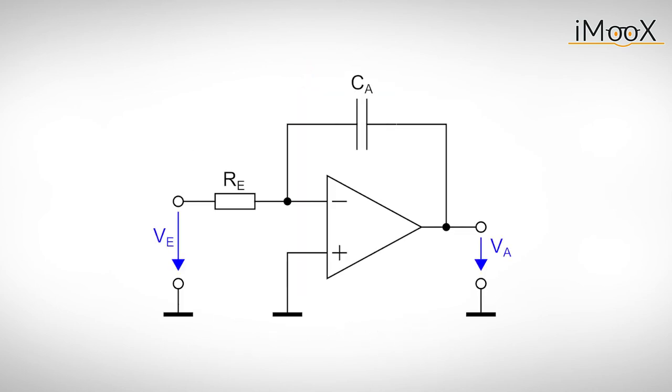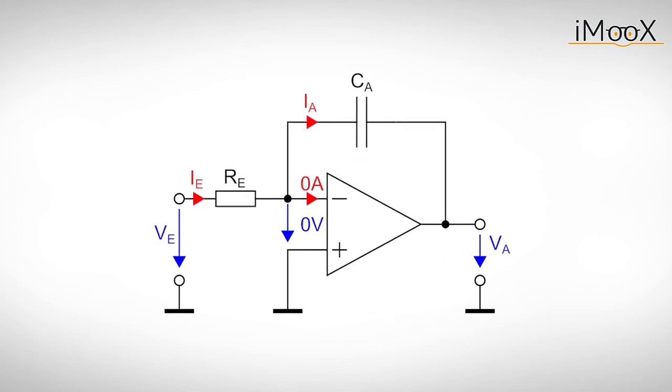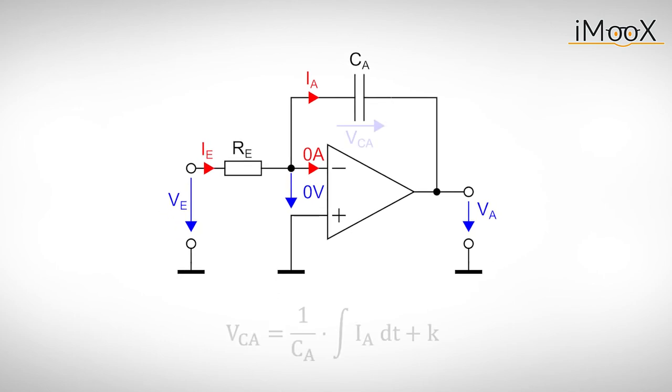But we can also realize an integral with operational amplifiers very easily. This time the capacitor CA is placed between the output and inverting input. The current IE coming from the input resistor RE charges the capacitor. We use the current voltage relation of the capacitor CA and solve for the voltage VCA. The integration constant K holds the voltage over the capacitor before we start our experiment.